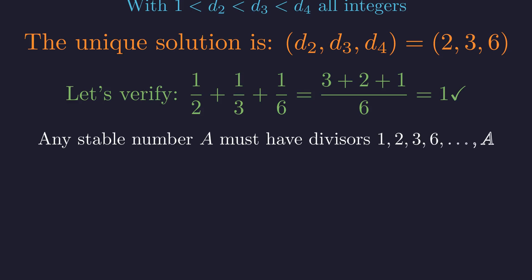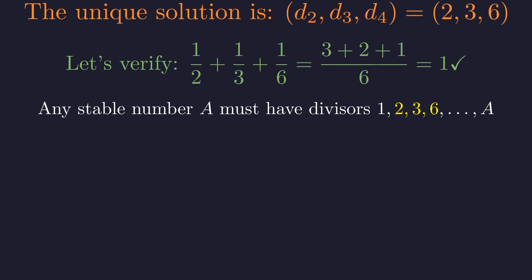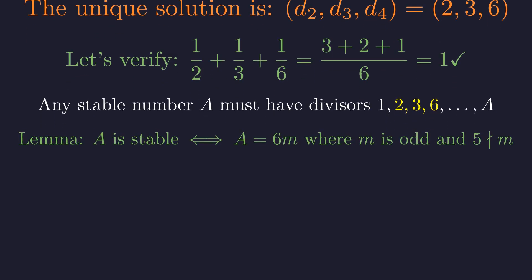This result defines the structure of any stable number A. Its three smallest divisors greater than 1 must be 2, 3, and 6. For 2, 3, and 6 to be the smallest divisors after 1, A must be divisible by both 2 and 3, but not by 4 or 5. For 2 to be the smallest prime divisor, A must be even. For 3 to be the next smallest prime divisor, A must be a multiple of 3. This means A is a multiple of 6.